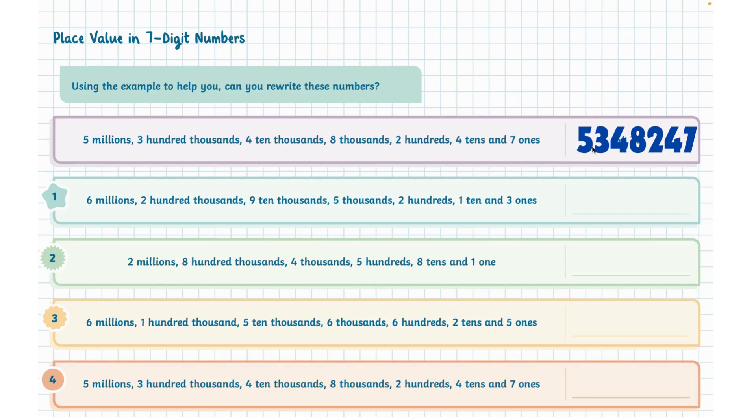So that is how I will get five, three, four, eight, two, four, seven. Five million three hundred and forty eight thousand two hundred and forty seven.